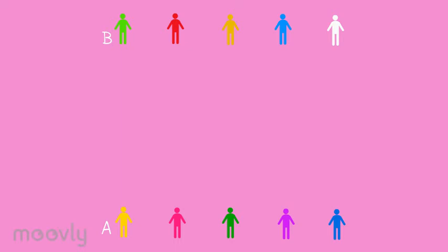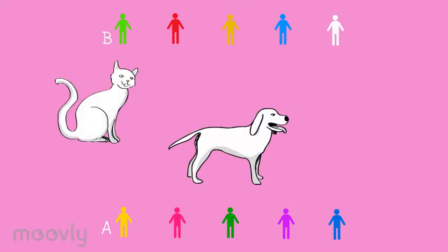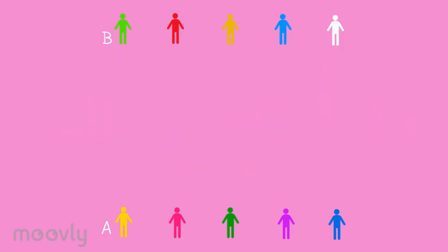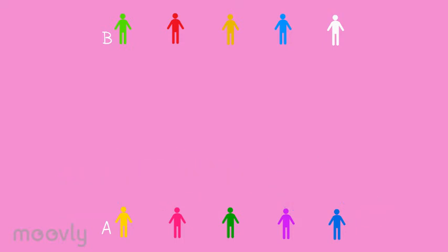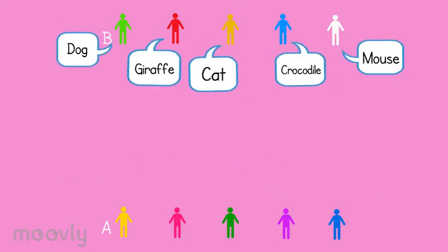Now you tell the participants to not name a color but an animal to the person in front of them, again on the same distance. When person A says the animal to person B, person B repeats the animal. Just as long until they both know for sure they have the same animal in mind.